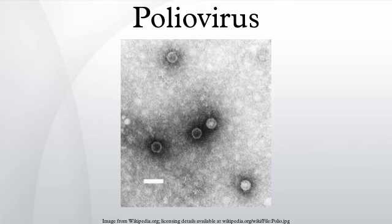Poliovirus mRNA is translated as one long polypeptide. This polypeptide is then autocleaved by internal proteases into approximately 10 individual viral proteins, including: 3DPoL, an RNA-dependent RNA polymerase whose function is to copy and multiply the viral RNA genome; 2Apro and 3Cpro/3CDPro, proteases which cleave the viral polypeptide; and VPg, a small protein that binds viral RNA and is necessary for synthesis of viral positive and negative strand RNA.